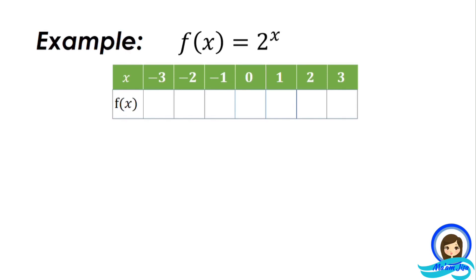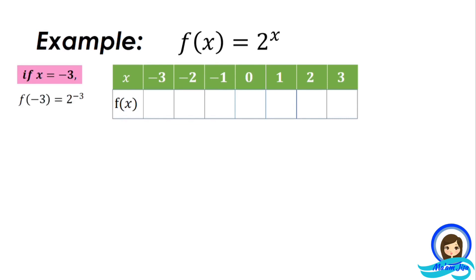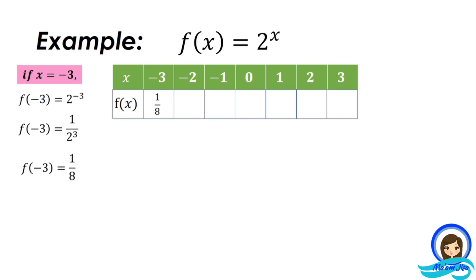Our given function is f(x) = 2^x. Let's construct a table of values. To find the value of the function at these numbers, you only have to evaluate the function. For instance, if x equals negative 3, substitute negative 3 into x: 2 to the power of negative 3, according to the laws of exponents, becomes 1 over 2 cubed, so 1/8.